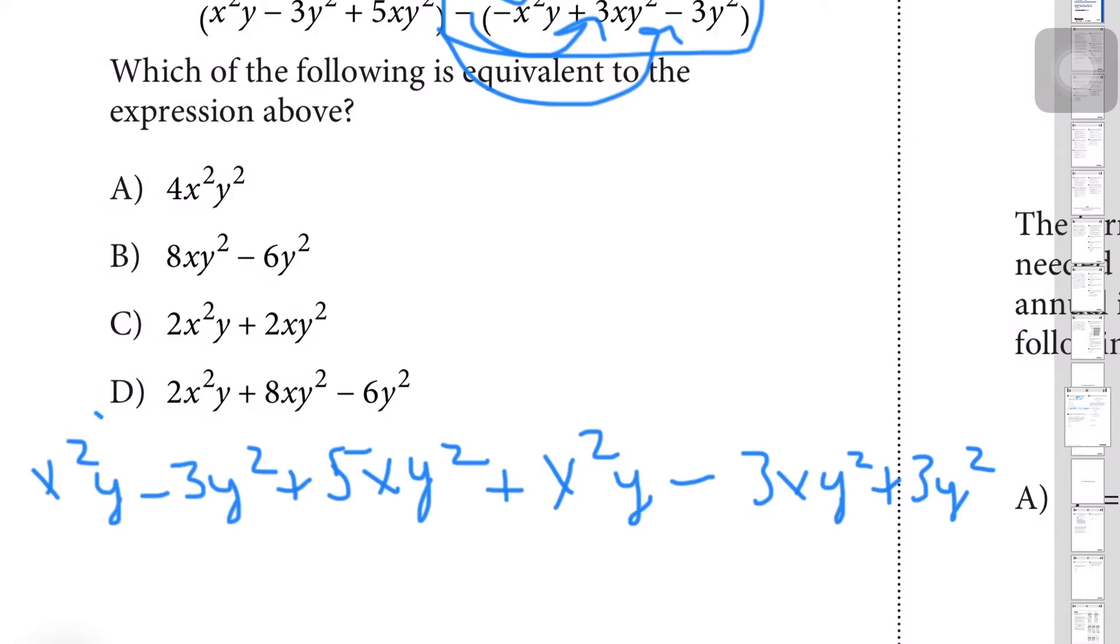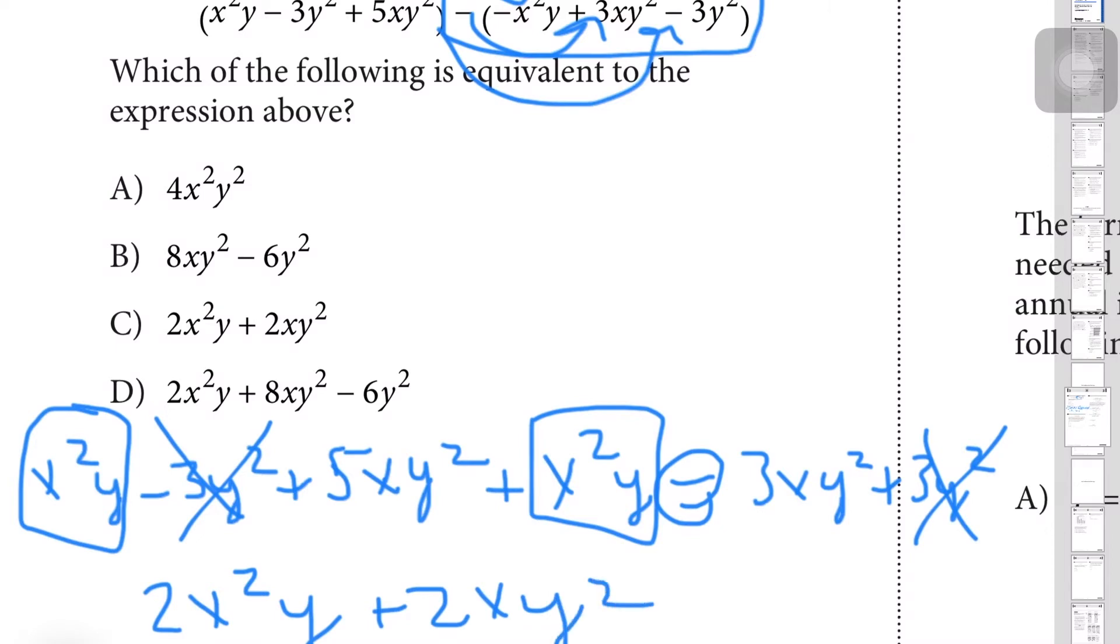You just simplify like terms here. You have x²y here and x²y here, so you have 2x²y. You have a -3y² here and a +3y² here, these simply just get cancelled out. And then these are like terms: the 5xy² and the -3xy². You simply subtract these two from each other because they're being subtracted, and you get 2x²y + 2xy², which would be letter C.